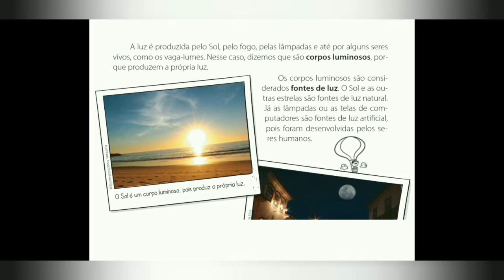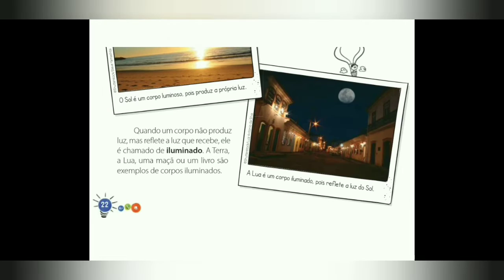Já as lâmpadas ou as telas de computadores são fontes de luz artificial, pois foram desenvolvidas pelos seres humanos. O Sol é um corpo luminoso, pois produz a própria luz. Já a Lua é um corpo iluminado, porque ela reflete a luz do Sol. Quando um corpo não produz luz, mas reflete a luz que recebe, ele é chamado de iluminado. Destaquem esse trecho. A Terra, a Lua, uma maçã, o livro, são exemplos de corpos iluminados, ou seja, que recebem a luz de outros corpos.